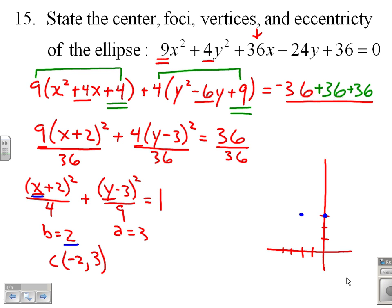To the right 2, to the left 2. And then my 3, being under the y, y is an up-down variable, so I'm going to go up 3, down 3. So up 3, up to 6, down 3 from the center, down to 0, and that defines my ellipse.